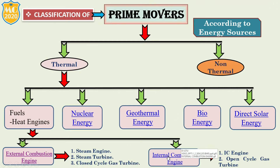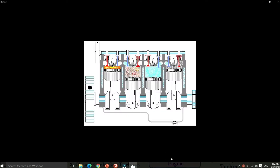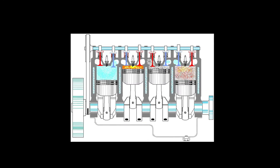Now we understand the internal combustion engine. In the internal combustion engine, the fuel burns inside the cylinder — that is why it is called the internal combustion engine. For example, in a simple car engine there are four to six separate cylinders in which gasoline constantly burns with oxygen to release heat energy. This is the IC engine with four separate cylinders.